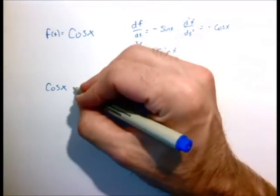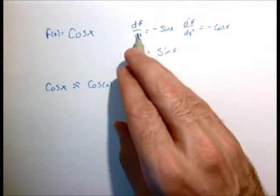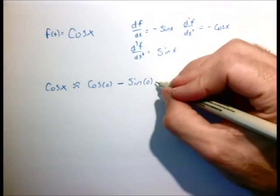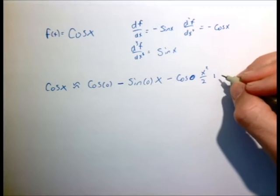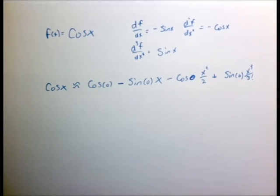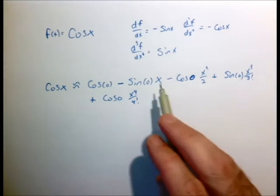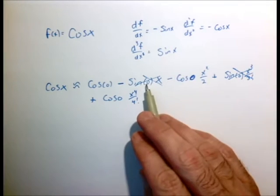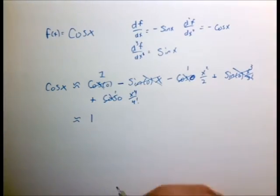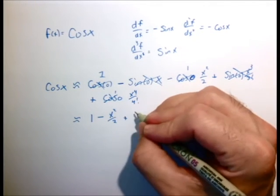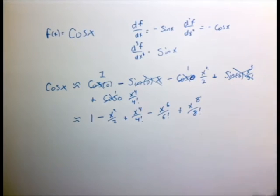The cosine of x Taylor series: the value at zero is cosine of zero, plus the first derivative — minus sine of zero — times x, plus the second derivative — minus cosine of zero — times x squared over two, plus the third derivative — sine of zero — times x cubed over 3 factorial, plus cosine of zero times x to the fourth over 4 factorial. Since sine of zero is zero, all odd terms vanish. All cosine of zeros equal one, giving us: 1 minus x squared over 2 plus x to the fourth over 4 factorial minus x to the sixth over 6 factorial plus x to the eighth over 8 factorial.